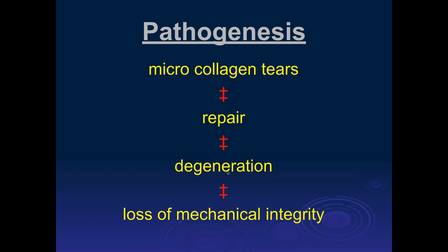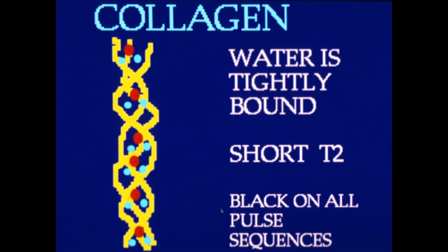Once you get enough degenerative disease, you start getting macroscopic tears. These can be either within the tendon or from the surface of the tendon, and you start losing mechanical integrity. The microscopic tears can coalesce together, you can get a very large tear, and then eventually rupture of the tendon depending on the mechanism. This is really thought to be the pathogenesis of rotator cuff disease.